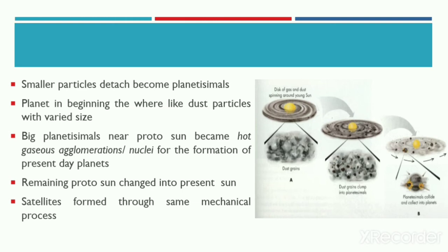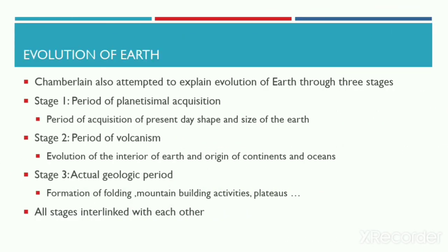The remaining protosun later on changed into our present-day sun. Similarly, the satellites were formed due to the same mechanism and process that happened during the formation of planets.